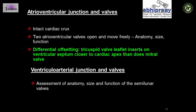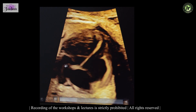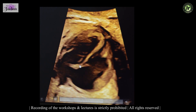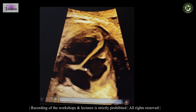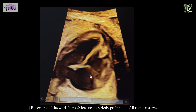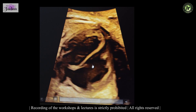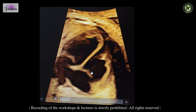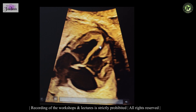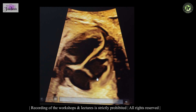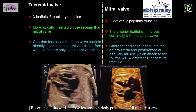Looking at the AV junctional valves and semilunar valves, you appreciate the offsetting — the tricuspid is more apically placed than the mitral. You should be able to see good movement — opening and closing of the valves — which denotes the anatomy and function of the ipsilateral chambers.